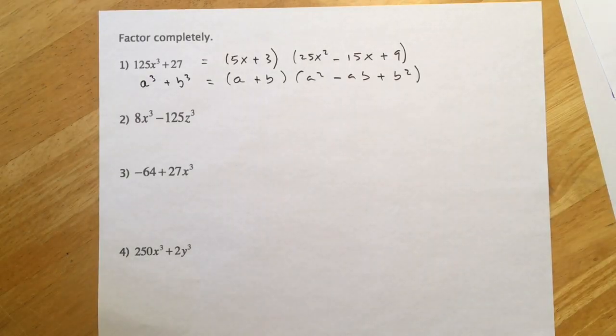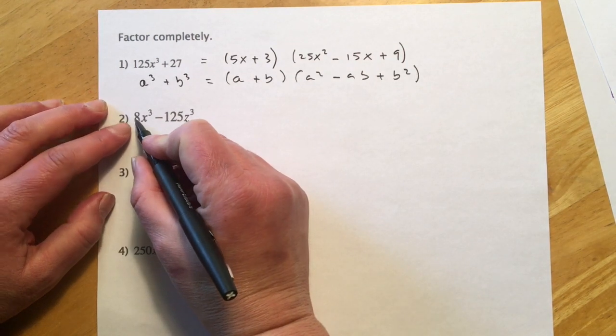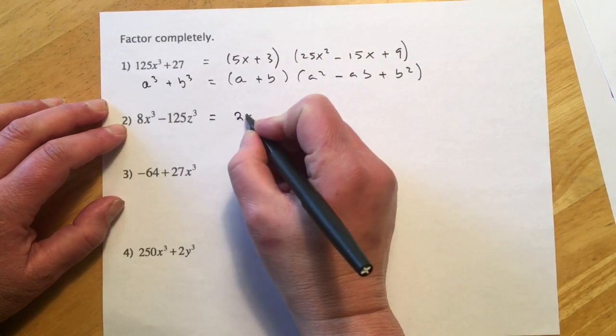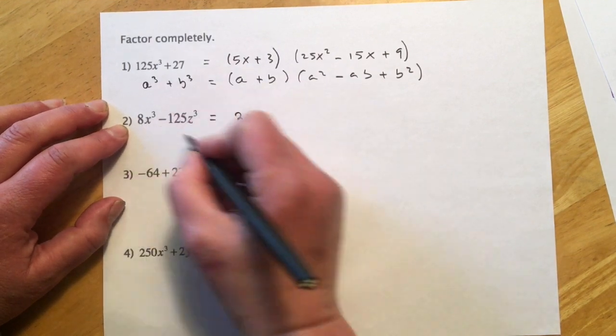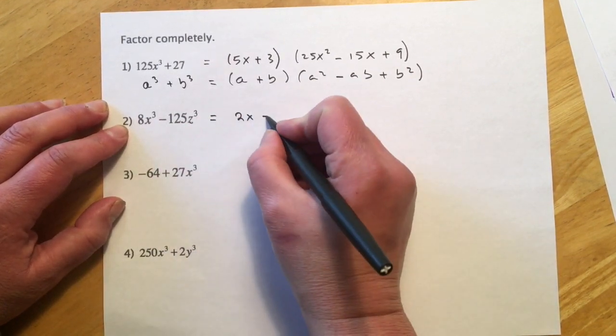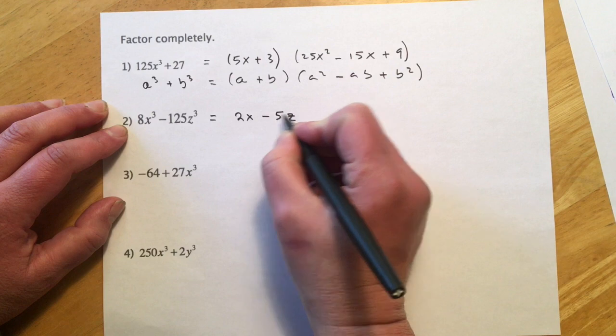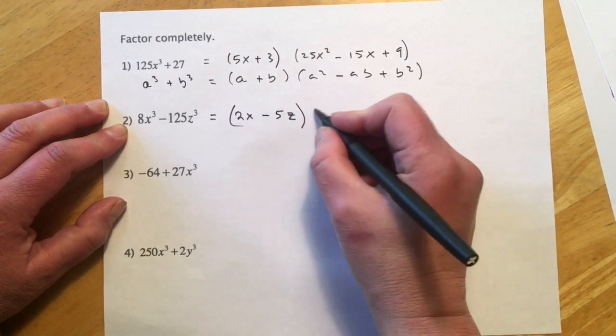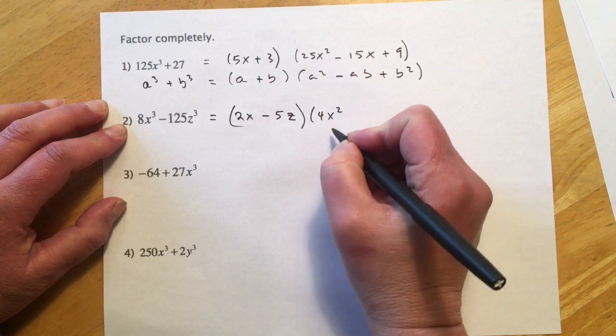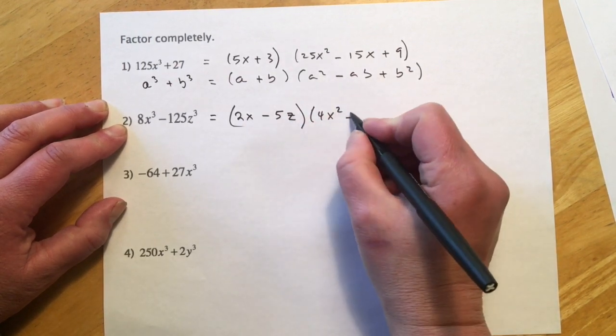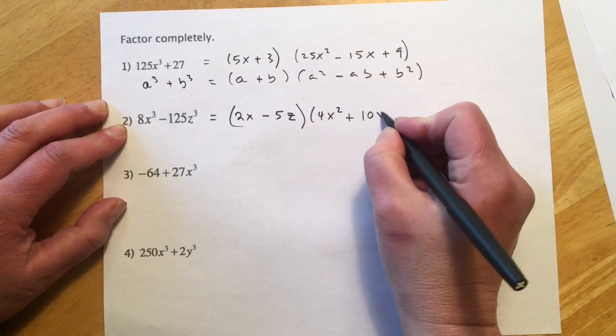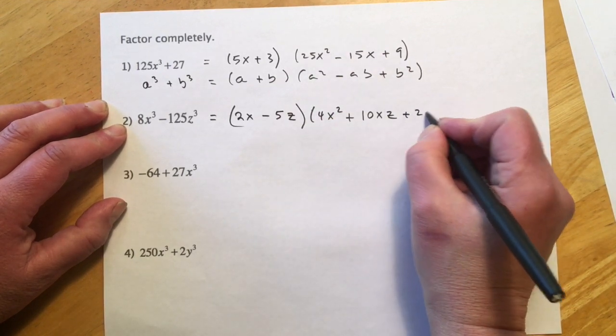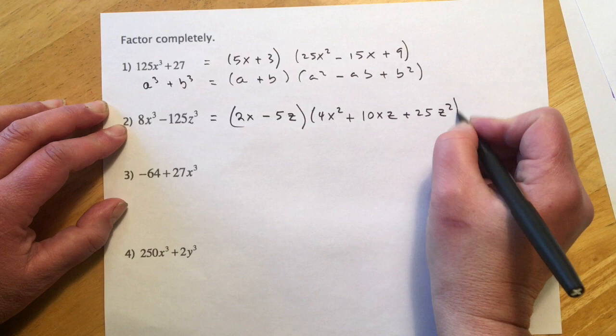Okay, for number 2, so this piece is going to break down to 2x, because 2x times 2x times 2x gets me back here. And likewise, this will be a 5z. And I just take whatever's here, 2x times 2x, 4x². Multiply these two together with the opposite sign, so that will be a 10xz and 5z times 5z for 25z².